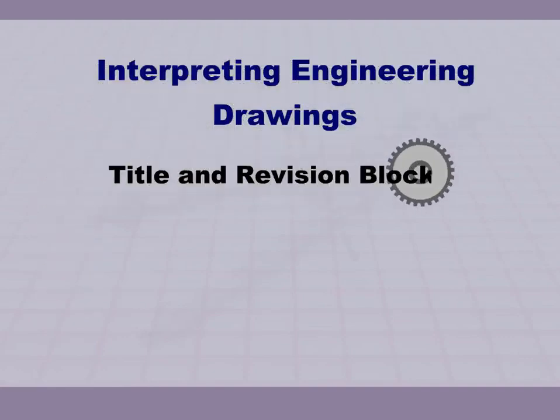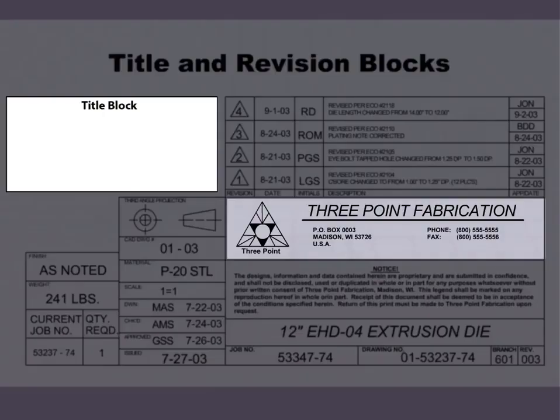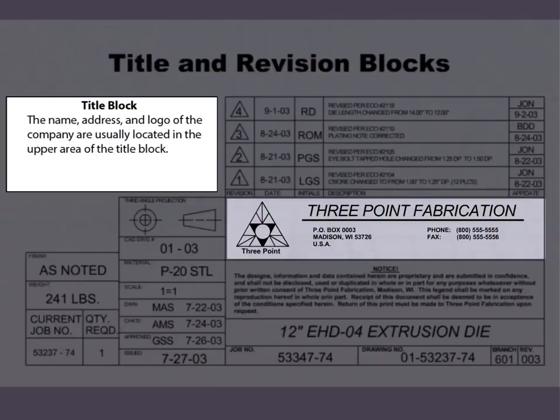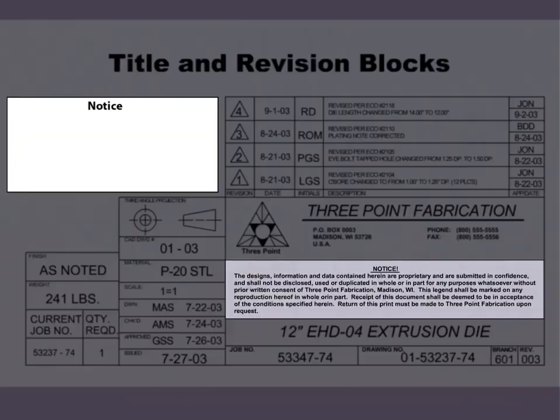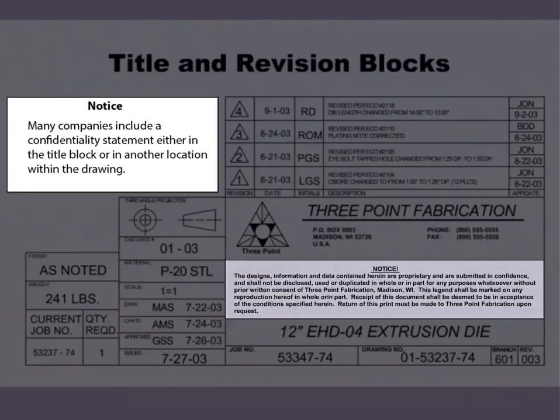Interpreting Engineering Drawings: Title and Revision Blocks. The name, address, and logo of the company are usually located in the upper area of the title block. Notice, many companies include a confidentiality statement either in the title block or in another location within the drawing.